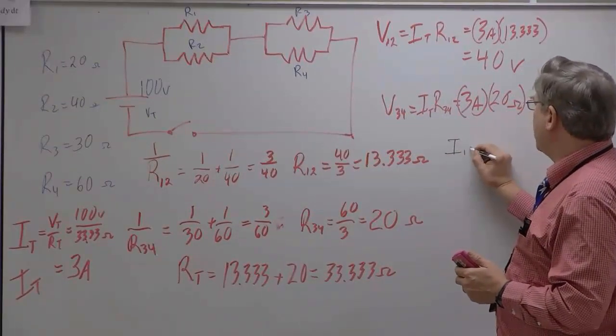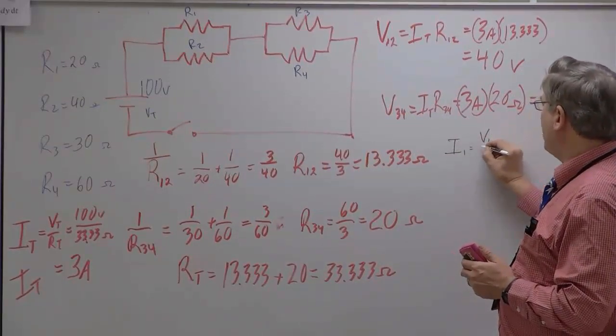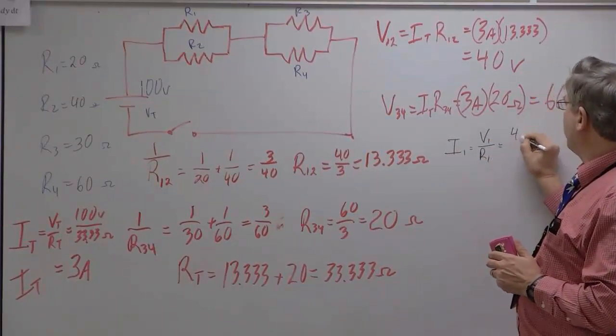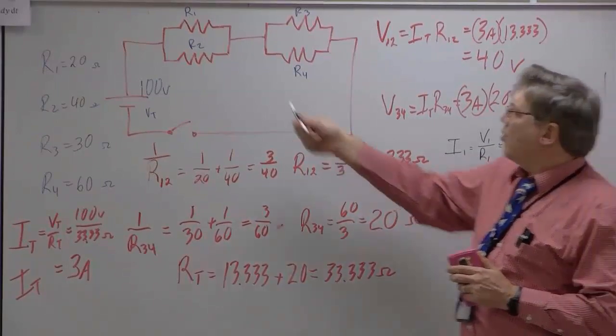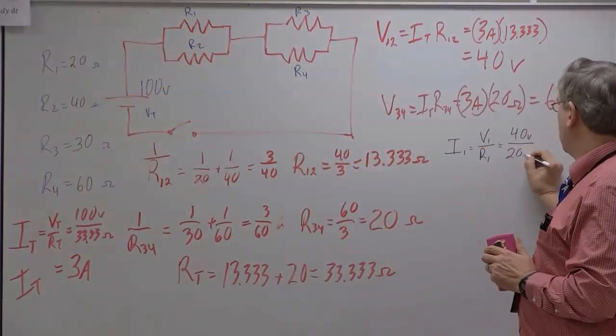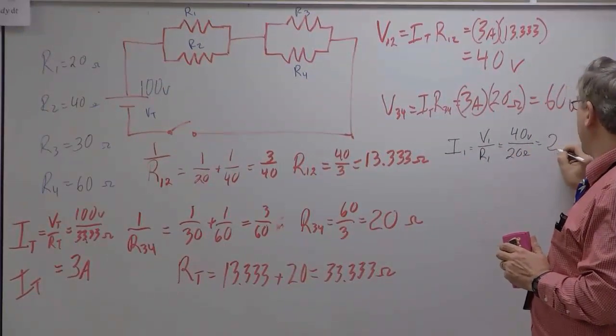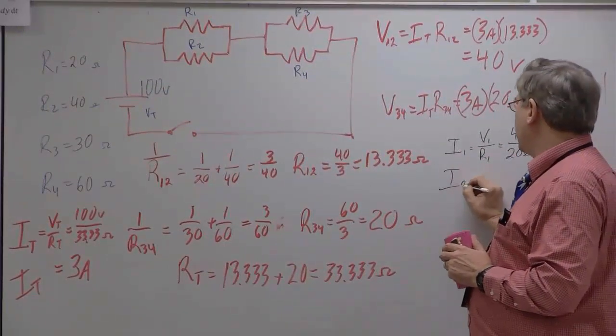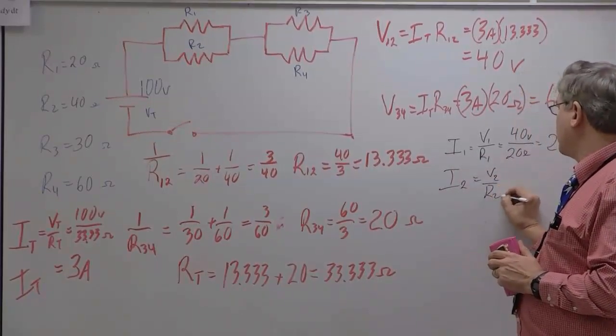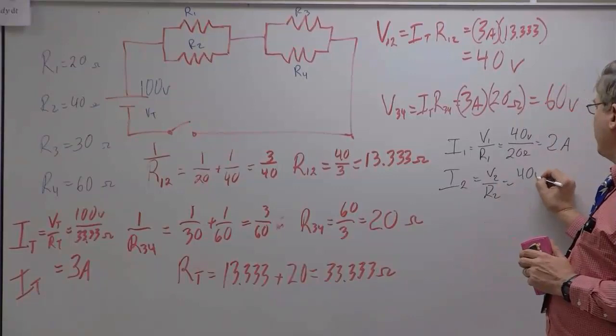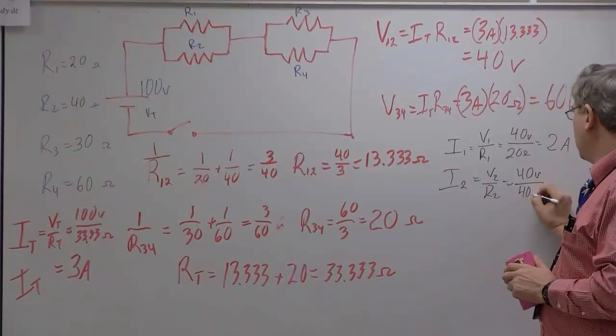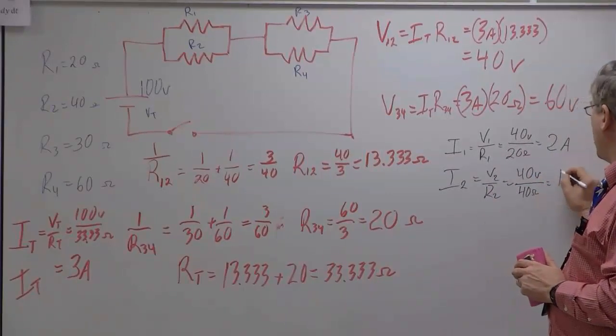So, I1 is going to be equal to V1 over R1, which is going to be equal to 40 volts divided by, and R1, we said was 20 ohms. 40 over 20 is 2 amps. I2 is going to be equal to V2 over R2. So, again, 40 volts over, and R2 is 40 ohms. So, that's equal to 1 amp.